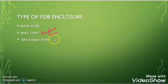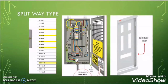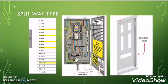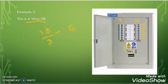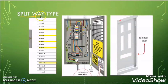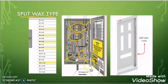Now let us discuss about the third type of DB enclosure — the split way type DB enclosure. To understand the split way type, we go back to the way type because the split type is the advanced version of the way type. In the way type DB enclosure, either all the outgoing breakers are of RCBO type, or a single RCD device controls all the outgoing circuits.